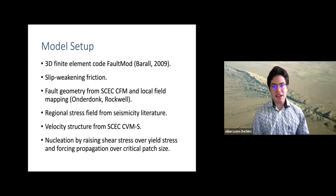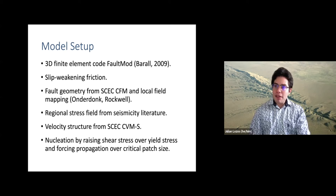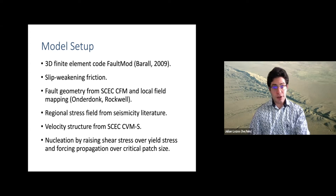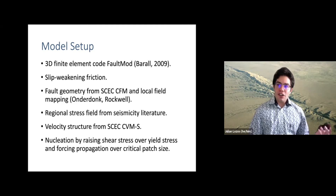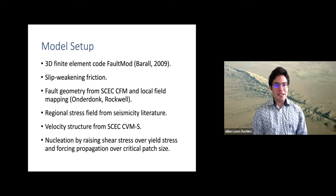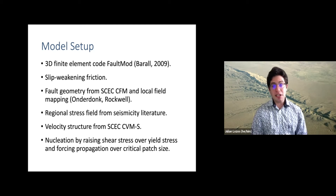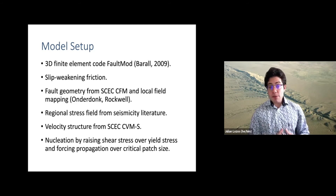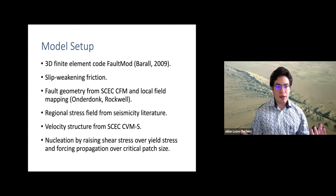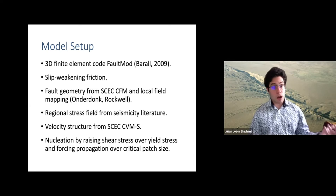I use a 3D finite element method — a fully dynamic rupture code called FaultMod. I use slip-weakening friction, which is a simple formulation that says the fault gets weaker as it slips further until it hits some critical value. I'm using fault geometries from the SCEC community fault model and local mapping, mostly work of Nate Underdonk and Tom Rockwell. I use a regional stress orientation from seismicity literature and a realistic velocity structure from the SCEC community velocity model.